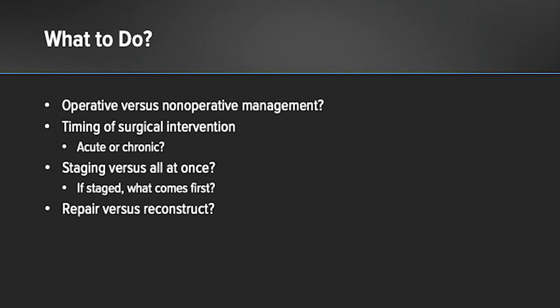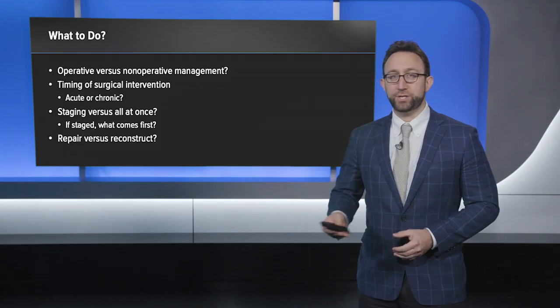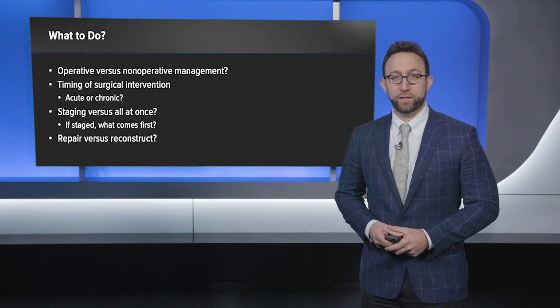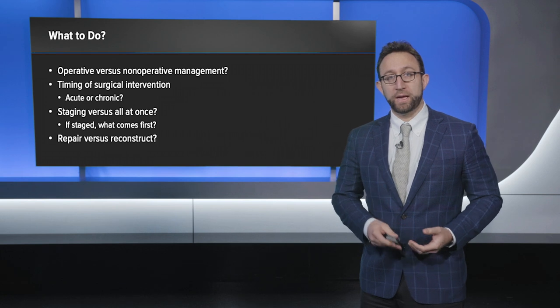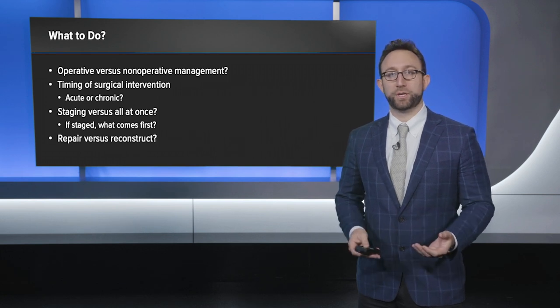In terms of timing of surgical intervention, we still don't have steadfast data regarding the optimal treatment strategy. You can do these acutely, in the chronic setting, or in staged fashion. Treating them acutely carries an increased risk for stiffness, while doing them chronically may result in more laxity. In terms of staging, you can do the PCL and posterolateral corner first, perhaps just the posterolateral corner, and then come back at a later time to do the cruciate ligaments.